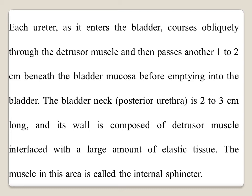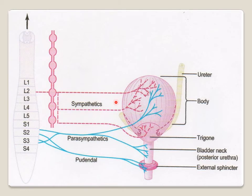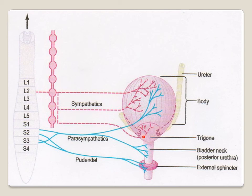The bladder neck, also called the posterior urethra, is about two to three centimeters long and its wall is composed of detrusor muscle interlaced with a large amount of elastic tissue. The muscle in this area is called the internal sphincter. The trigone, above the bladder neck, has its lower apex opening into the posterior urethra, and both ureters open at its uppermost angles, passing obliquely through the detrusor muscle and one to two centimeters under the mucosa.